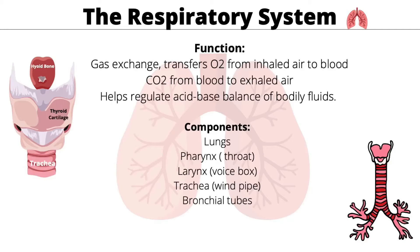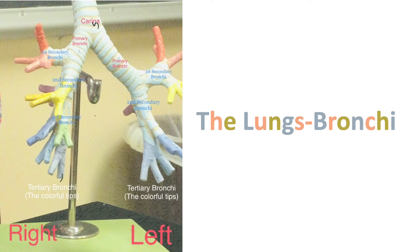The respiratory system's main function is gas exchange — transferring oxygen from inhaled air to blood and removing CO2 from blood to exhaled air. It also helps maintain the acid-base balance of body fluids. Components include the lungs, pharynx, larynx, trachea, and bronchial tubes.